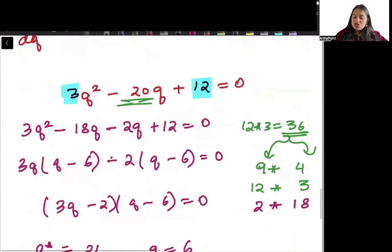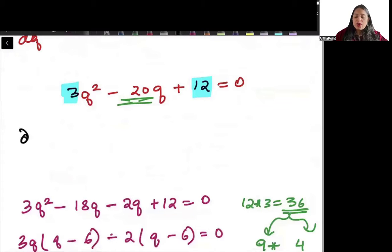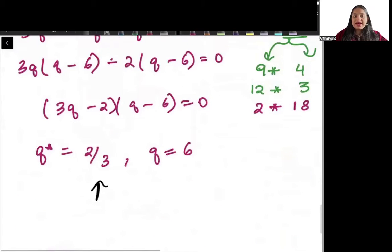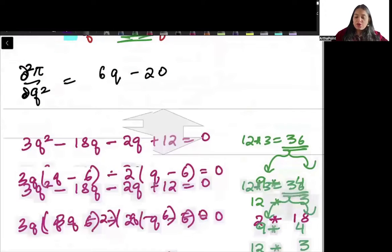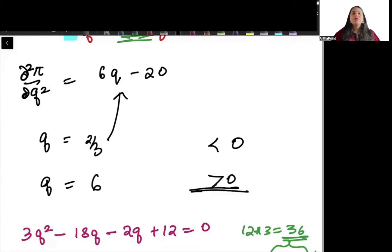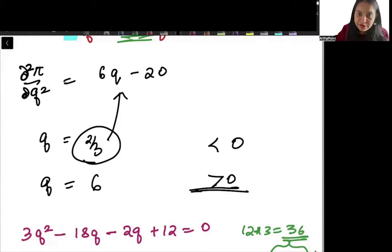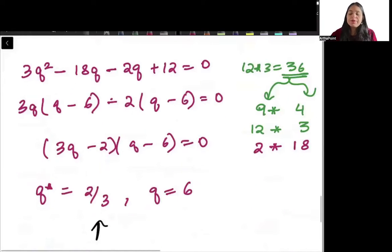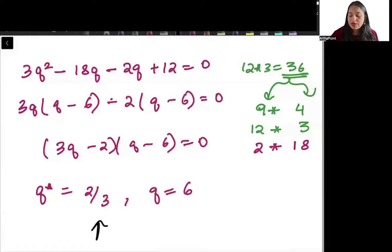Find the double derivative to confirm the maximum: d²π/dQ² = 6Q - 20. When Q = 2/3, the double derivative is negative; when Q = 6, it is positive. Since we are interested in profit maximization — which occurs when the double derivative is negative — Q = 2/3 is the answer. This kind of question can be asked in the exam.